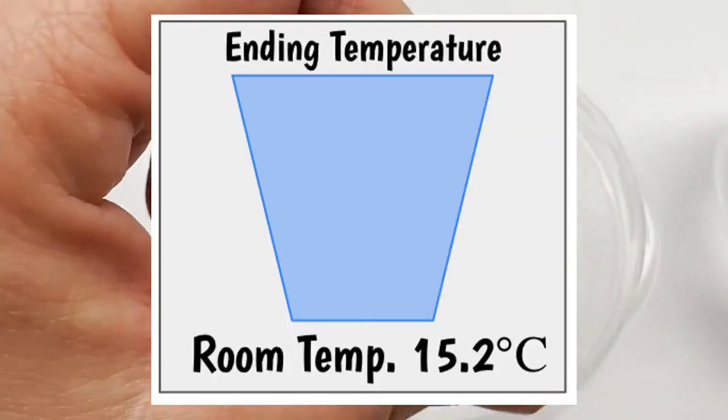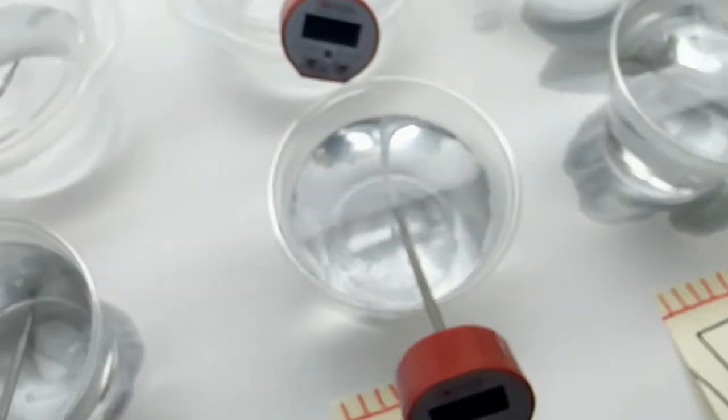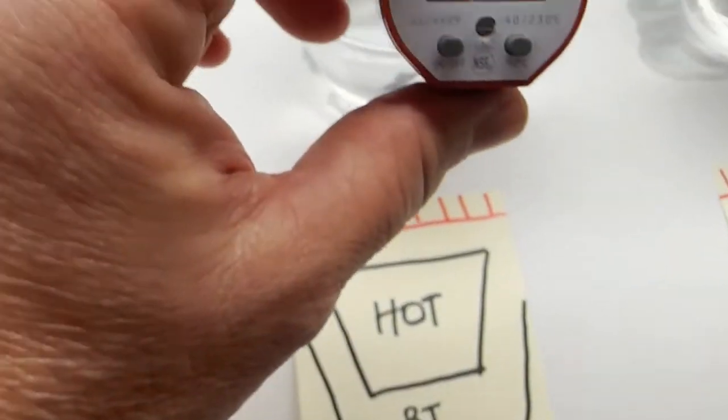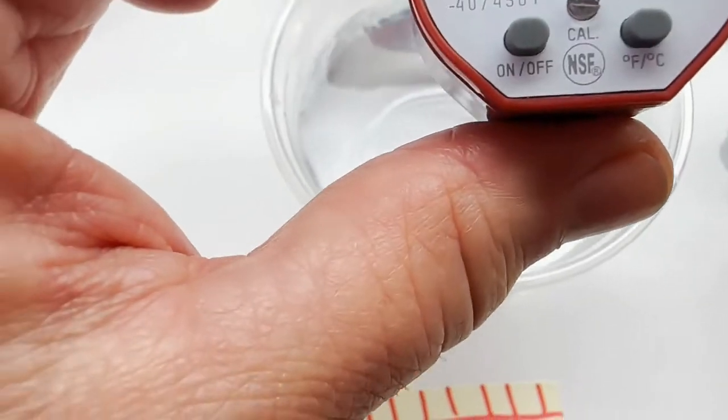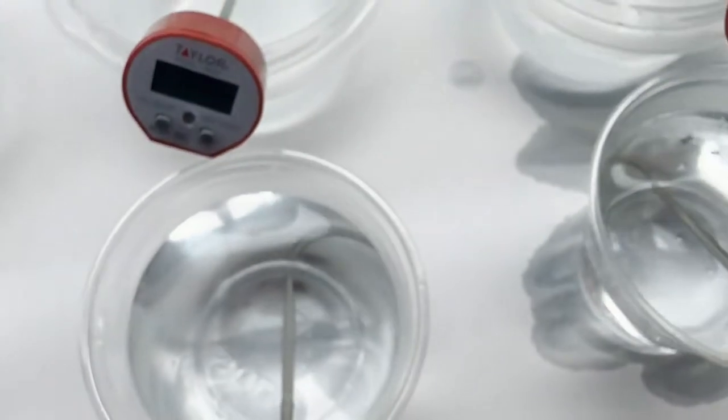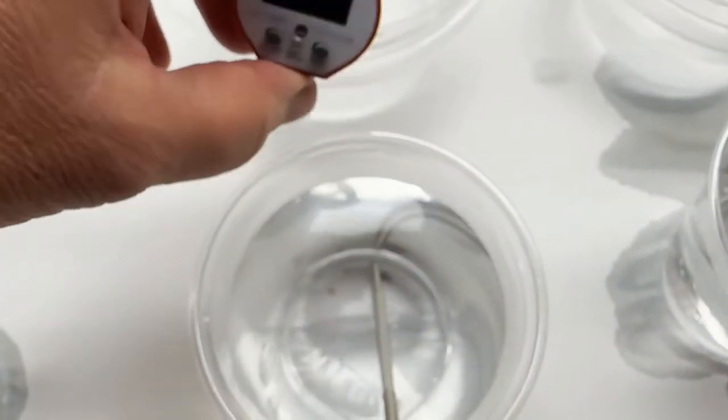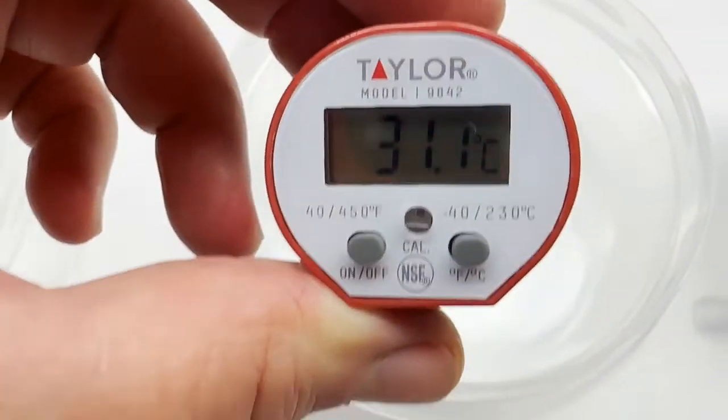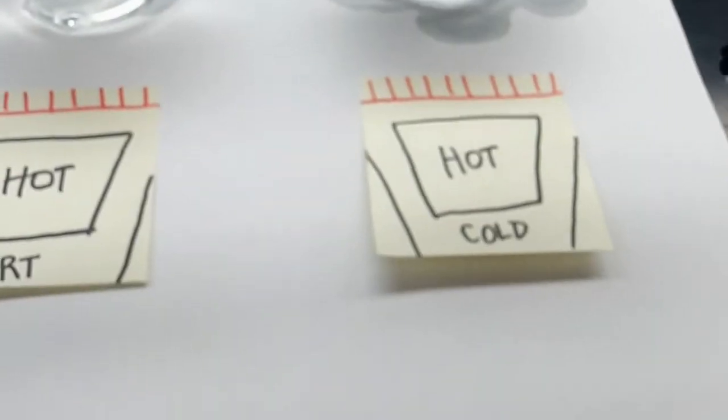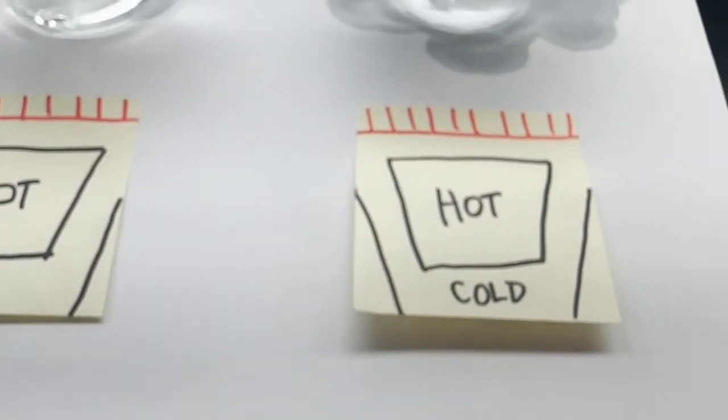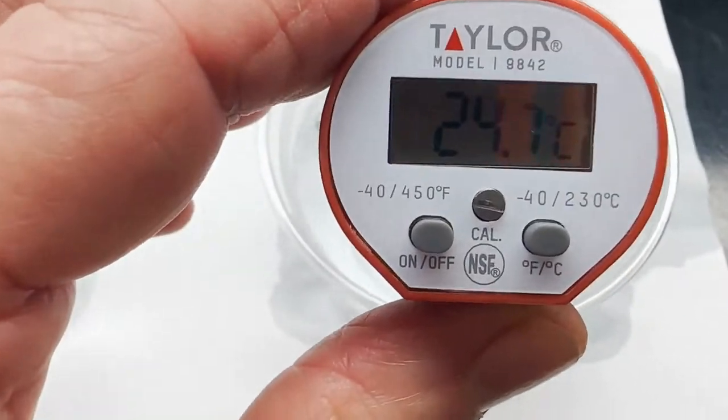The hot water that was in the room temperature water is 28.4, and the room temperature water that the hot water was in is 30.9.